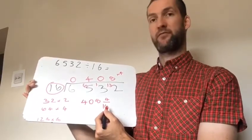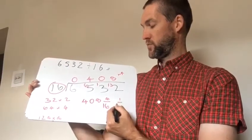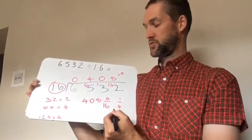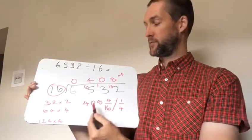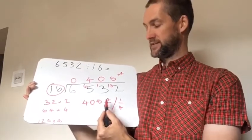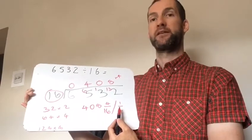You may have realised that you could simplify 4 sixteenths to 1 quarter. So if you have simplified it your answer would be 408 and 1 quarter. So that's turning your remainder into a fraction.